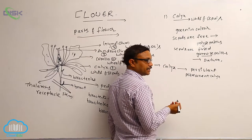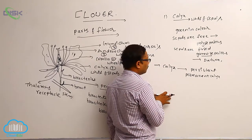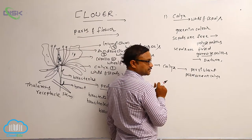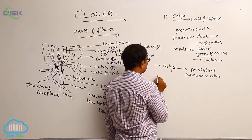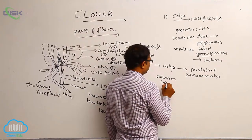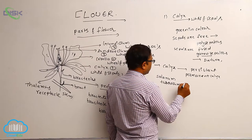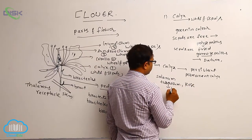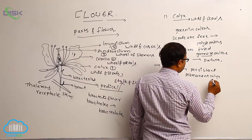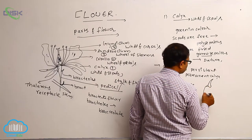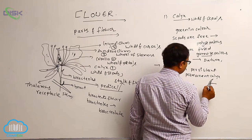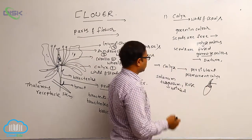After fertilization, generally sepals fall off. But in some plants, calyx is persistent or permanent. That is known as persistent calyx. For example, in Solanum tuberosum (brinjal) and rose, calyx is attached to that fruit. So that is known as permanent or persistent calyx.